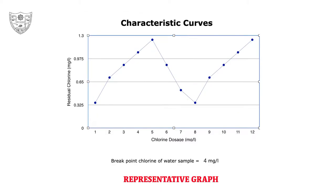Plot a graph taking dosages in mg per litre along x-axis and residual chlorine along y-axis. Determine breakpoint chlorination and calculate chlorine demand based on the graph.